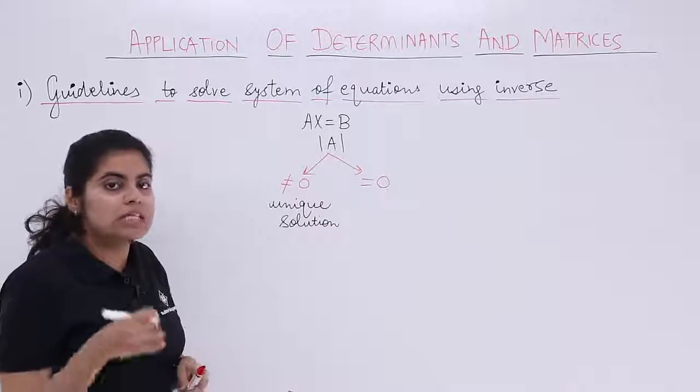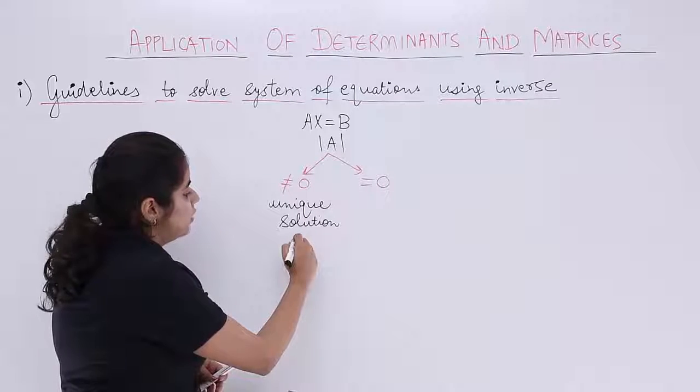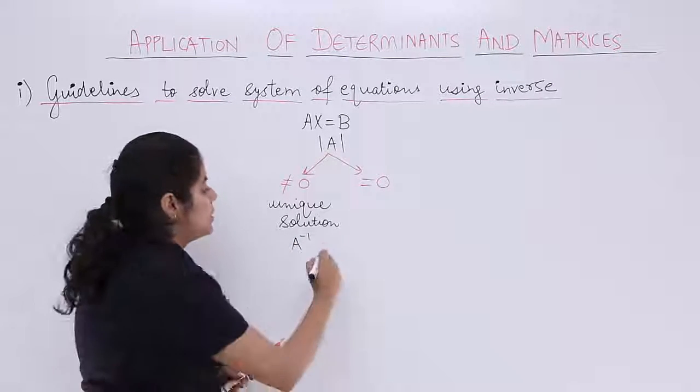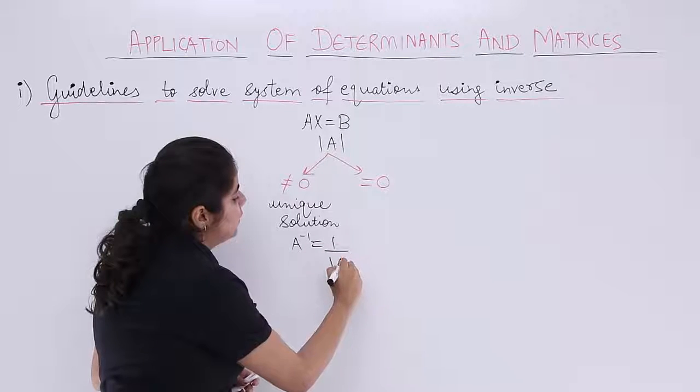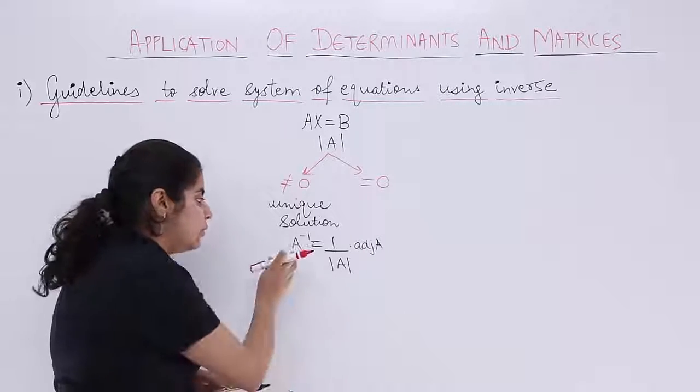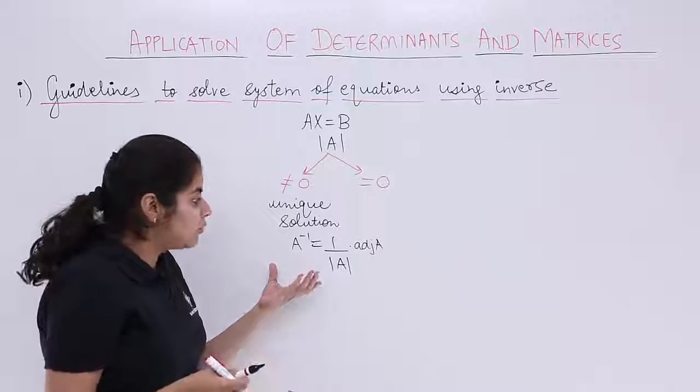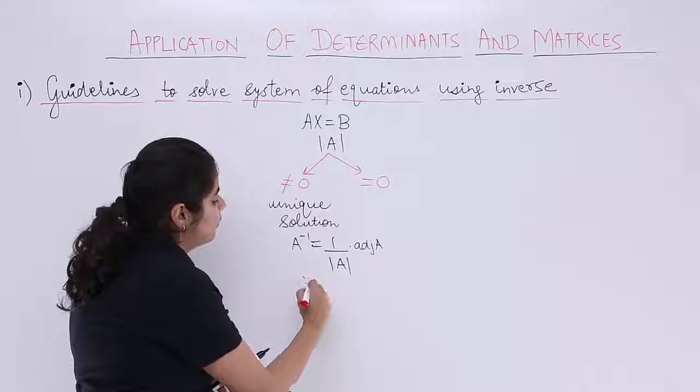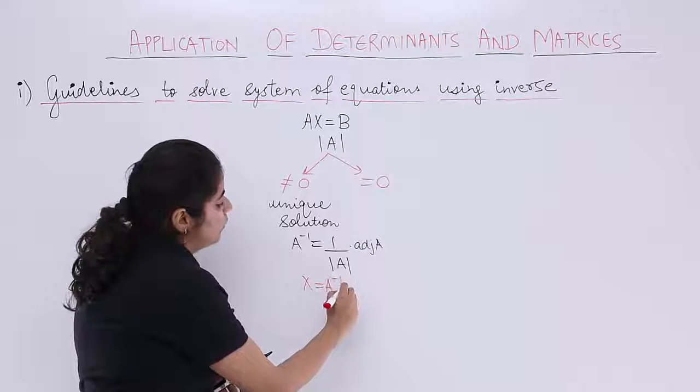And how to compute inverse? Inverse will be computed in the form as A inverse. This A inverse will be basically 1 by determinant of A multiplied by adjoint of A. That means firstly you will calculate inverse, and for inverse you will use this formula. And the solution will simply be given by X = A inverse B.